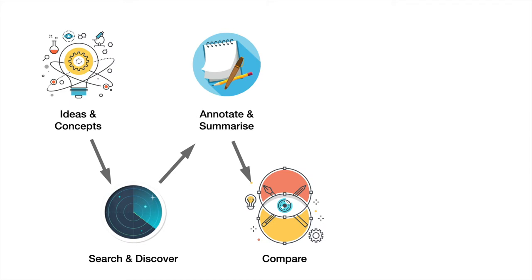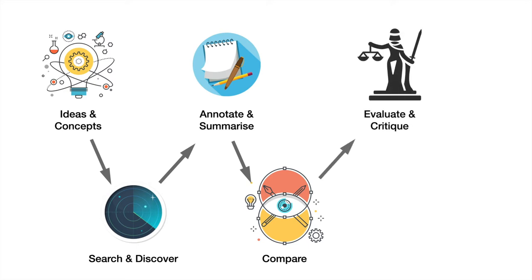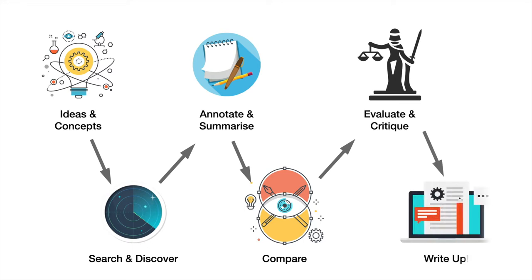Synthesis in a literature review also involves evaluation and critique. You need to explain why you are including certain articles in your review, why you think they're relevant, and what you think of their approach to the topic. You need to be critical, not just list off a ton of references.